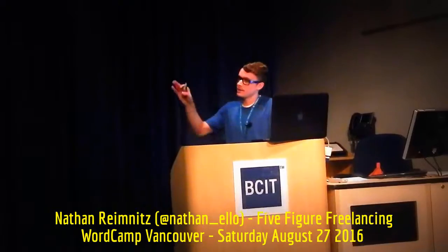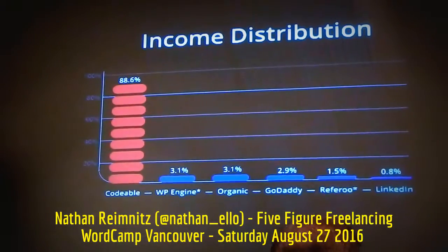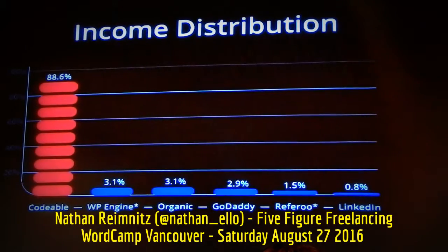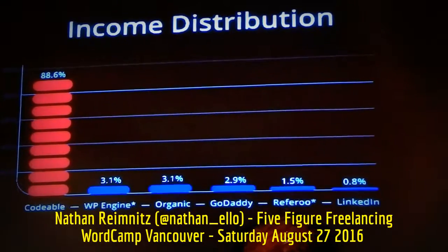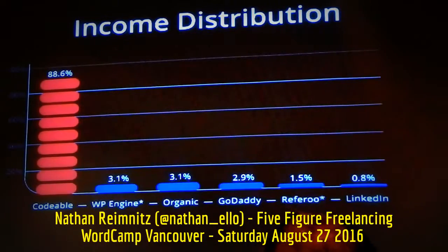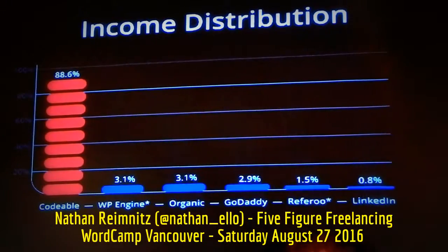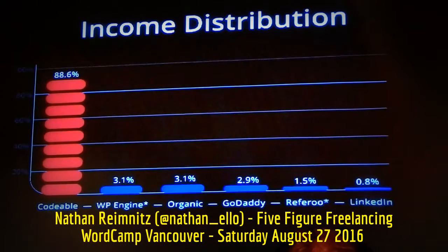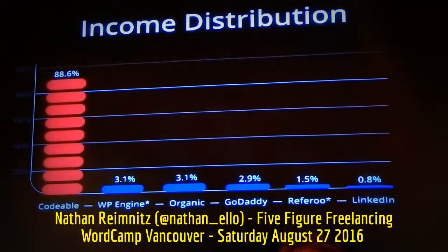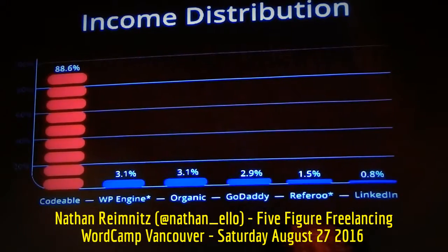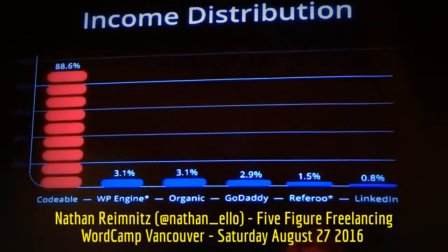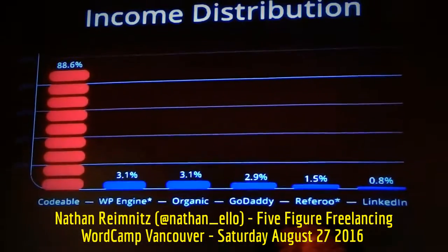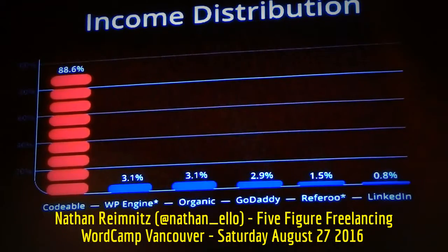If we look at the income distribution curve across these networks, you'll see vast differences. It's important to understand that these networks aren't created equally. When you find one that works well for you, I'd encourage you to focus your energy there. Codable is responsible for 88.6% of my income over the last year, and their referral program is another 1.5% — so we're actually over 90%. My eggs are in the Codable basket right now.